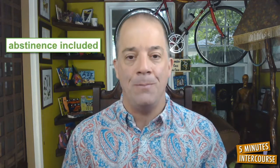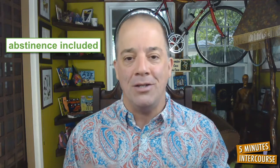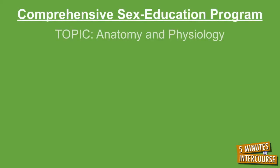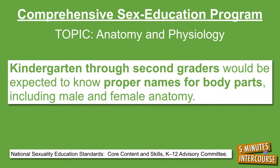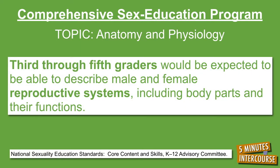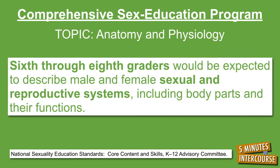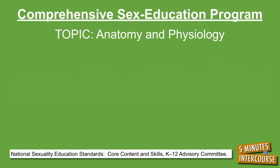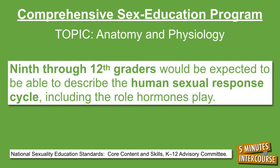All comprehensive sex education programs are taught at an age-appropriate level. For example, for the topic of anatomy and physiology, kindergarten through second graders would be expected to know proper names for body parts, including male and female anatomy. Third through fifth graders would be expected to describe male and female reproductive systems, including body parts and their functions. Sixth through eighth graders would be expected to describe male and female sexual and reproductive systems, including body parts and their functions. And ninth through twelfth graders would be expected to describe the human sexual response cycle, including the role hormones play.